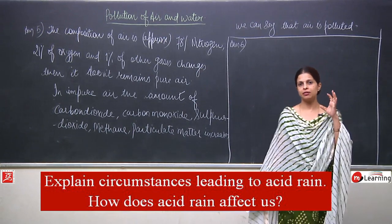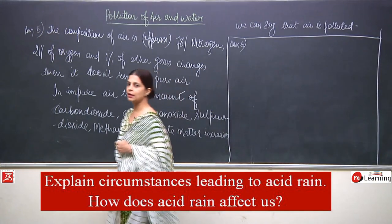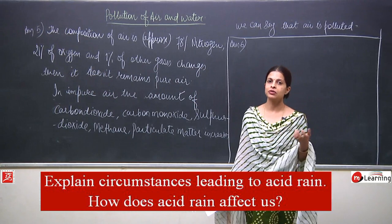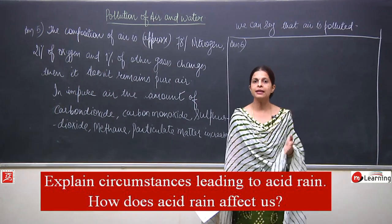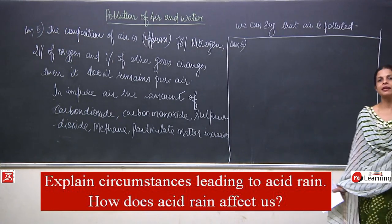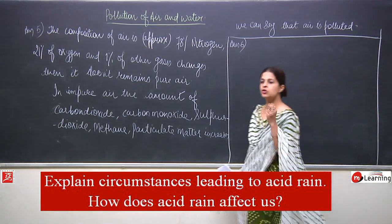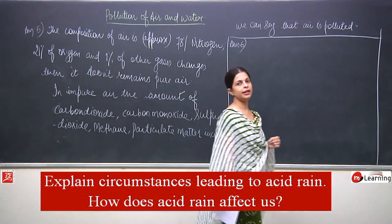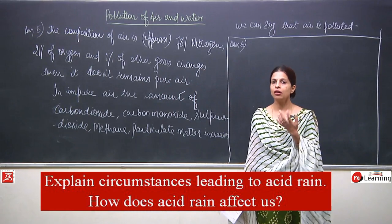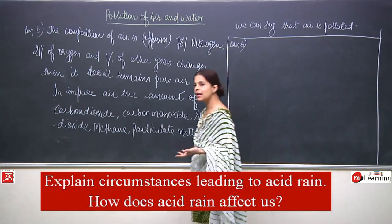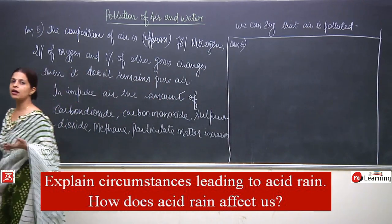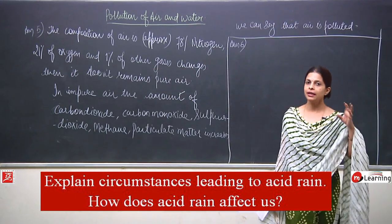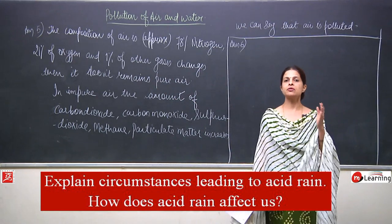These oxides should not be increased. When they increase, they become part of the acid rain by getting dissolved in rainwater and coming down. As we just discussed, it is very harmful for both living things and non-living things.